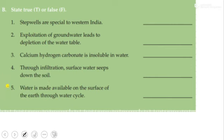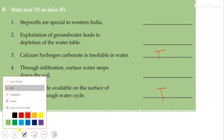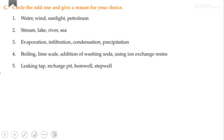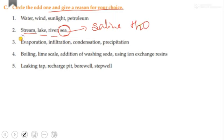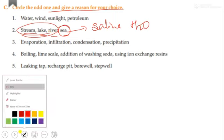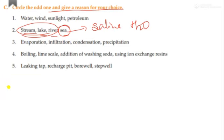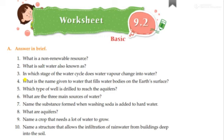Calcium hydrogen carbonate is soluble in water — this is true. Water is made available through the water cycle — this is also true. For the remaining blanks, please try by yourself. For the 'circle the odd one out' question, the answer is sea, because sea has saline water whereas stream, lake, and river are sources of fresh water.